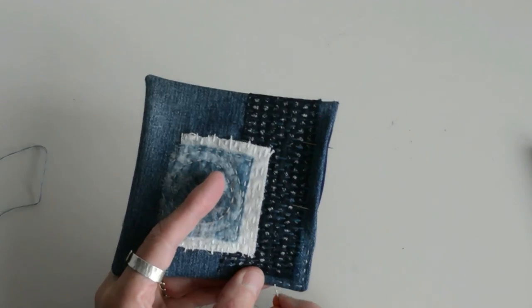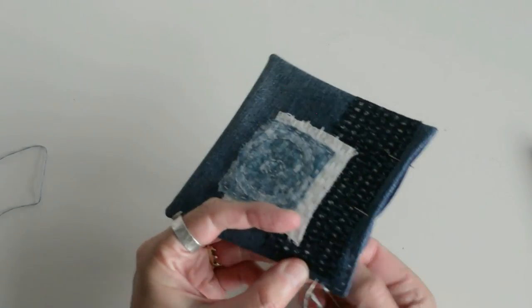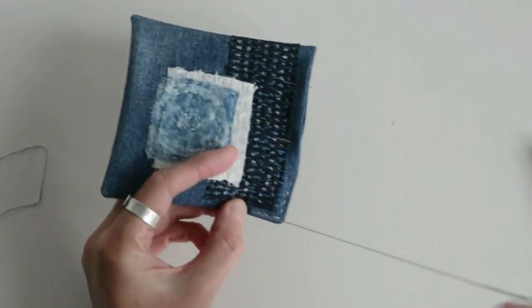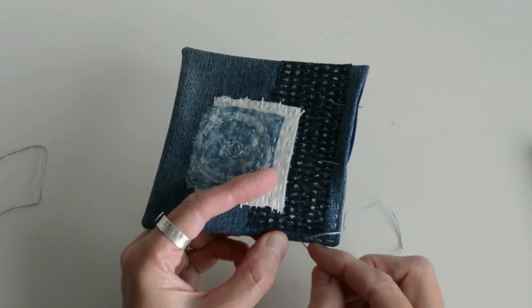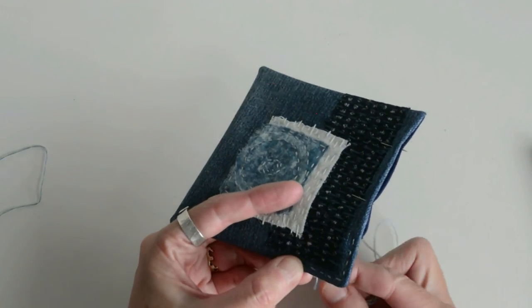I've chosen a blue thread which is contrasting to the denim, but not too strong a contrast. That level of choice is yours obviously. So keep going all the way around and do it for the rest of your coasters.